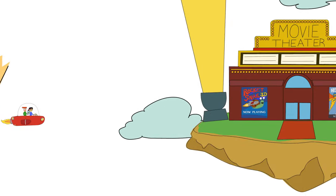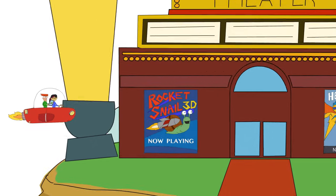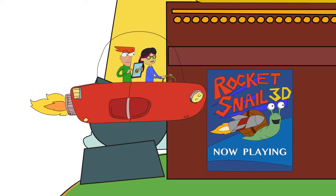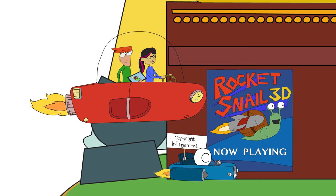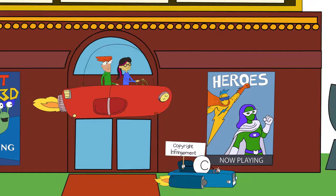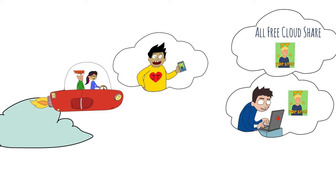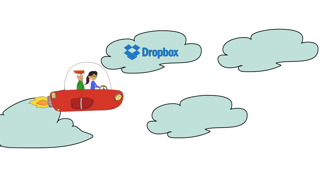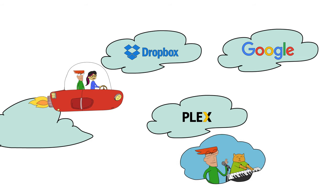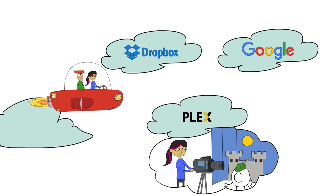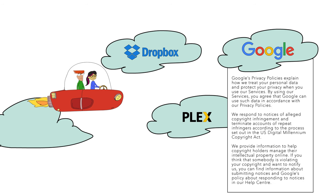Sometimes it's tough to know if a site is legit or not. But if a movie just came out in the theaters and you find it streaming or for download for free, it's likely illegal and distributed without the creator's permission. Using file storage sites to allow your friends to download copies of your music library and movies is also copyright infringement. File storage sites like Dropbox, Plex, or Google Drive are great for helping us keep track of all our important files, but they should not be used as a means for sharing copyrighted creative work. These sites prohibit this kind of illegal sharing.